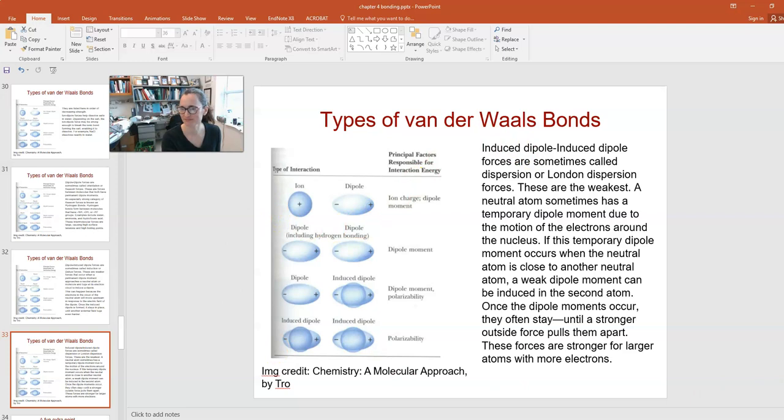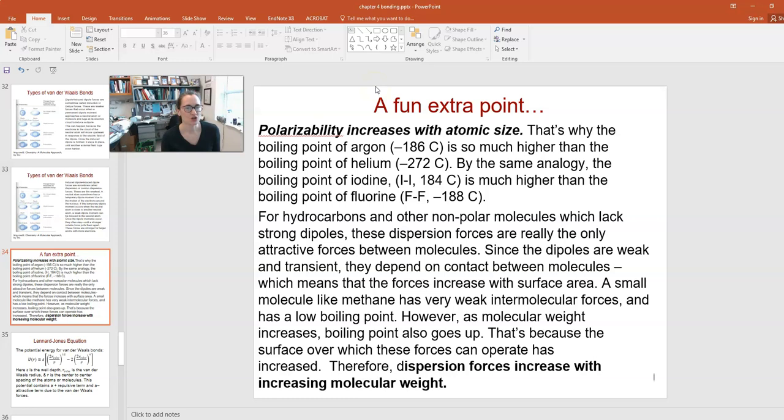There's another fun extra point. Your polarizability, or how easy it is to induce a dipole moment in a material, increases with atomic size. There are more electrons, so you can pull apart more charge on either side. That's why the boiling point of argon at minus 186 Celsius is so much higher than the boiling point of helium at 4 Kelvin or minus 272 Celsius. By the same analogy, the boiling point of iodine at 184 Celsius is much higher than the boiling point of fluorine.